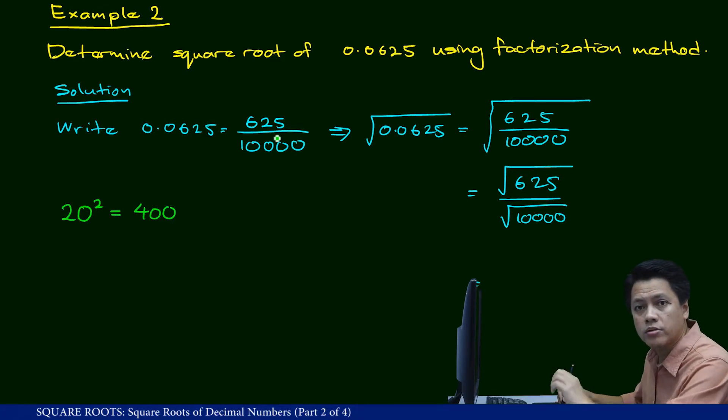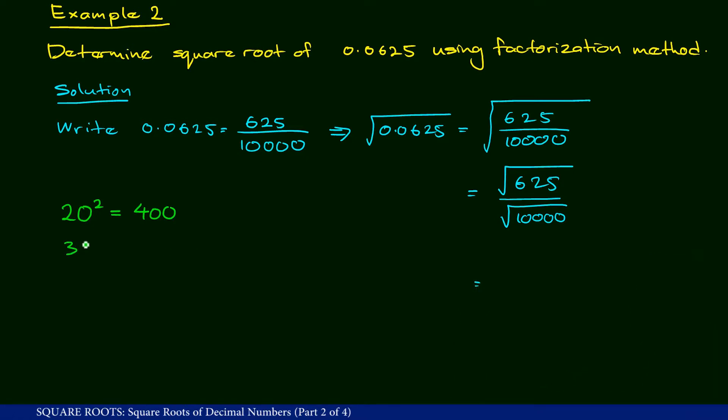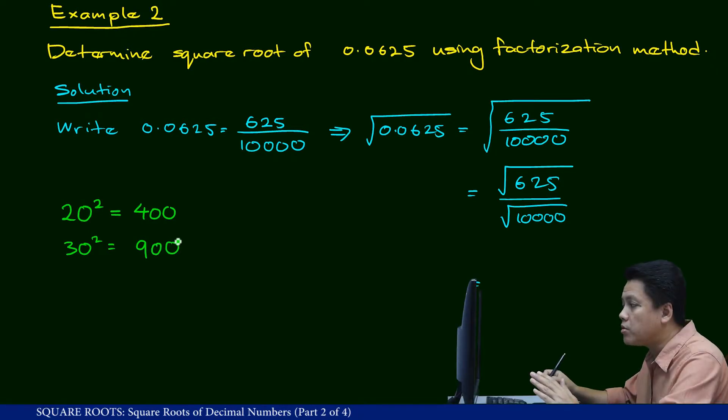So let's try 30 squared this time around. So 30 squared is equal to 900. So again, 30 is not really the square root of 625, but it's somewhere smaller. So let's pick up somewhere in the middle between 20 and 30.